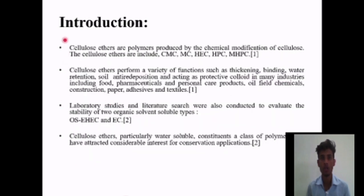Introduction: Cellulose ethers are polymers produced by the chemical modification of cellulose. The cellulose ethers include CMC (carboxymethylcellulose), MC (methyl cellulose), HEC (hydroxyethyl cellulose), HPC (hydroxypropyl cellulose), and MHPC (methyl hydroxypropyl cellulose). Cellulose ethers perform a variety of functions such as thickening, binding, soil anti-redeposition, and acting as a protective polymer in many industries including construction, silicate, and food industries.